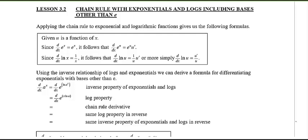In lesson 3.2 we're going to use the chain rule again, so I hope you had good practice with it in lesson 3.1. If not, you should do that first before today's lesson. We're going to combine the chain rule with exponential and logarithmic functions. As a review, we know the derivative of e to the power x is just itself. So the question is: what happens if I replace x with something else, like e to the power of x cubed minus 3x?